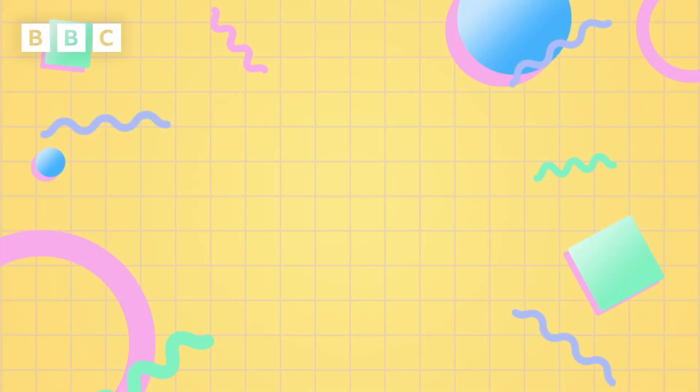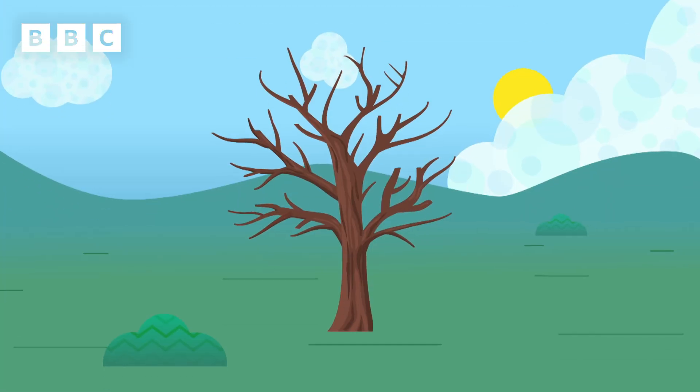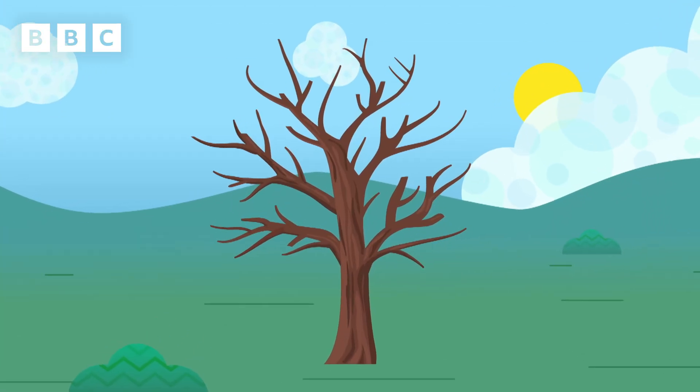A year is divided into four seasons: Spring, Summer, Autumn and Winter. Each season is about three months or 12 weeks long. You can notice the seasons changing by looking at the trees around you.